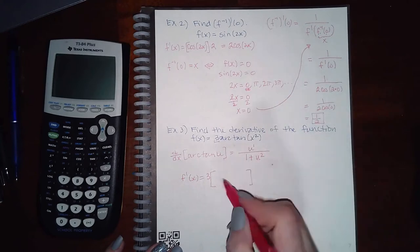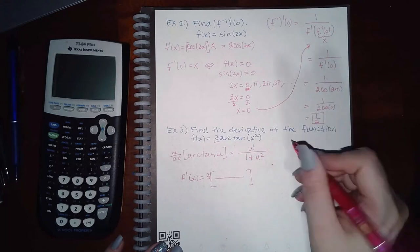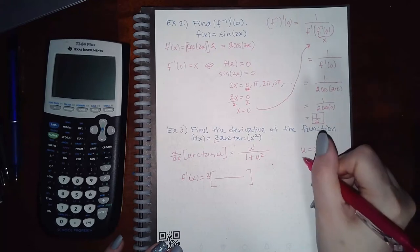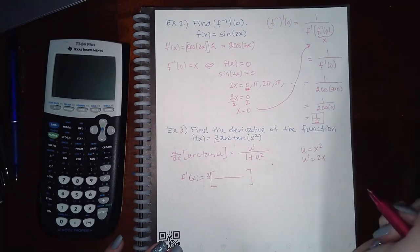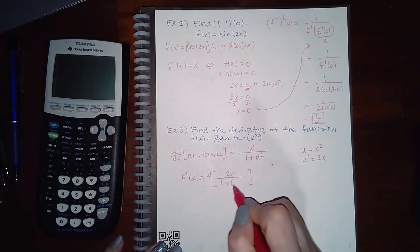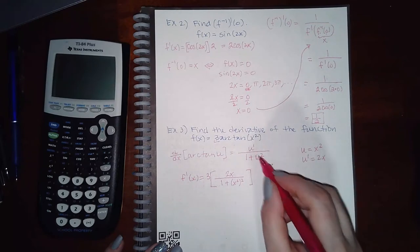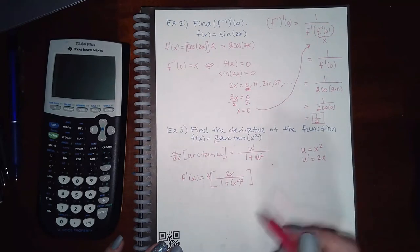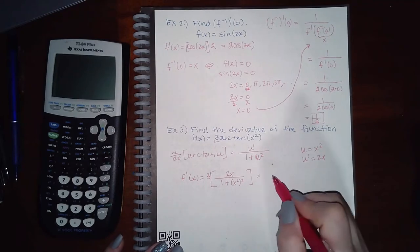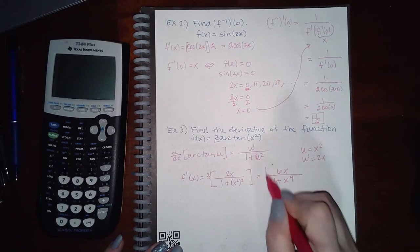To figure out what the fraction looks like, we need to identify u and find u'. In this case the angle is x², so u is x² and u' is 2x. My numerator should be 2x and my denominator should be 1 plus x² squared, because u is x² so that term is x squared, and then I have another square from the formula.